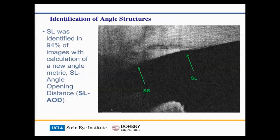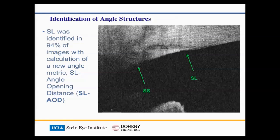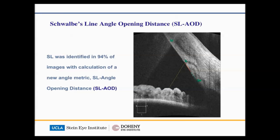With this change in technology, Vic Chopra and the group at the Doheny Image Reading Center have developed novel ways to describe and identify angle structures. Instead of basing measurements on posterior angle structures such as scleral spur, we're identifying Schwalbe's line, which you can see in almost every patient. You can see the ending of the corneal endothelium into Schwalbe's line, and we're describing angle metrics based on their relationship to Schwalbe's line. This was really pioneered by the Dirk group and Vic Chopra in particular.